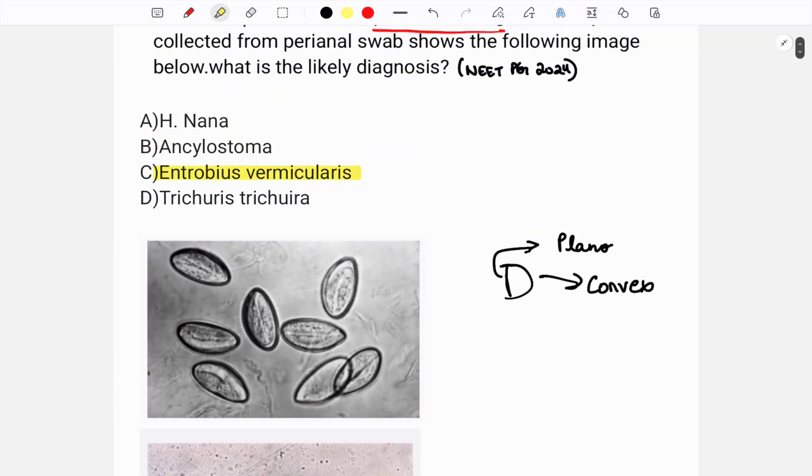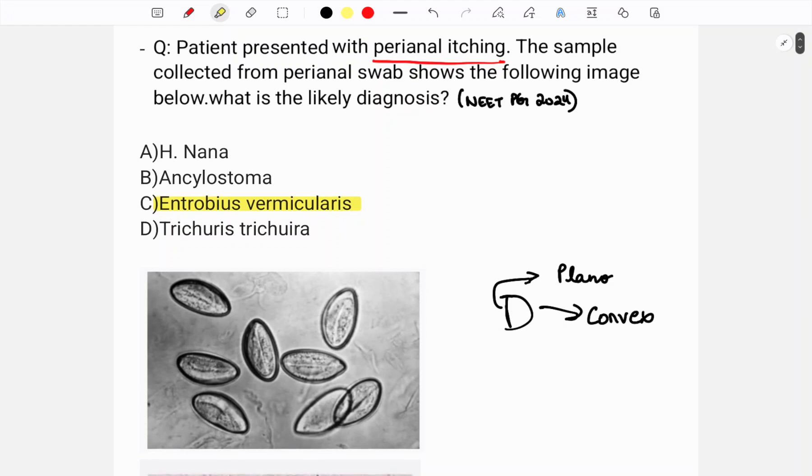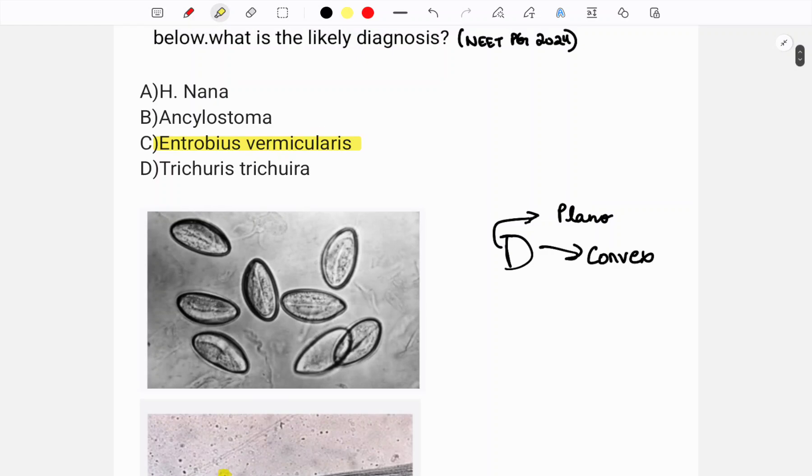But every time you answer a question, you have to see the other options also. You can't just jump to one right answer and go to the next question. You have to see all the options and rule them out even if you know the answer.